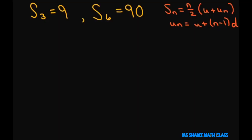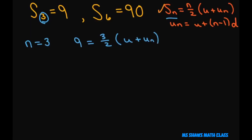We get started with the summation formula for arithmetic series. For the first equation, n equals 3, so S sub 3 is 9, giving us 9 equals 3 divided by 2 times the first term plus the last term. For the second equation, n equals 6, so 90 equals 6 divided by 2 times u plus u sub n.